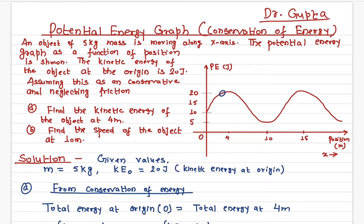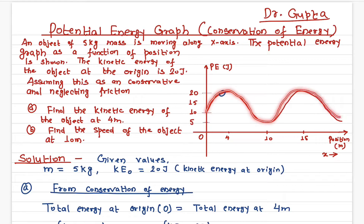In this video I'll talk about the potential energy graph of a conservative system. We have a five kilogram mass moving along the x-axis. As it is moving along the axis there is a bump — it is moving on a hill. When it is moving on a hill the height changes, and if the height changes the potential energy of the system changes. This is just an analogous visualization; what is happening in fact is the potential energy of the object is changing along the x-axis.